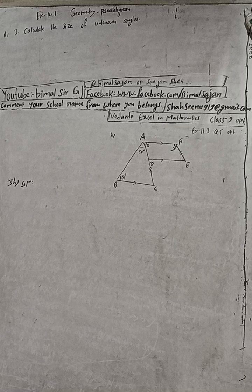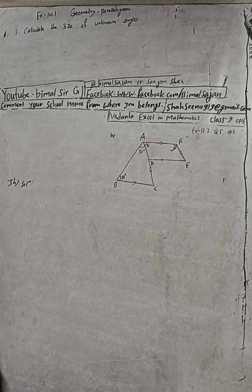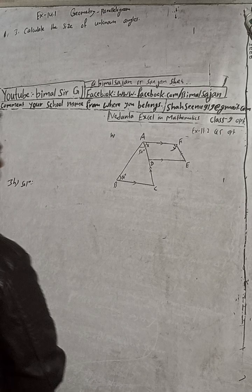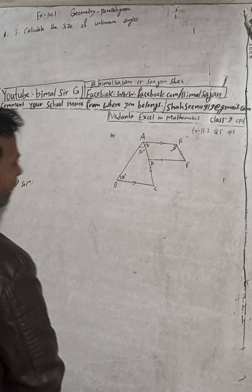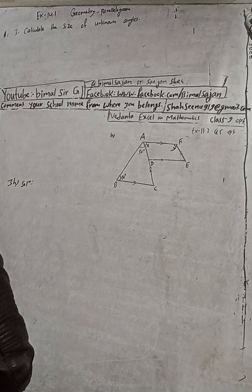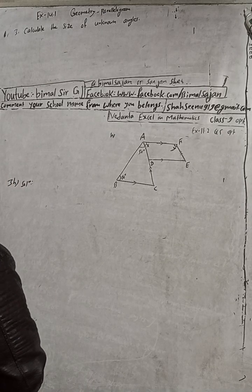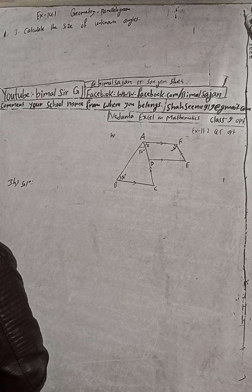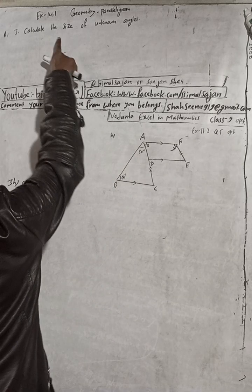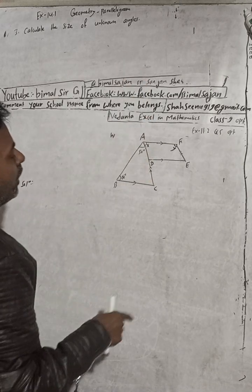Let me start this solution. 3H. We have to calculate the size of the unknown angles.